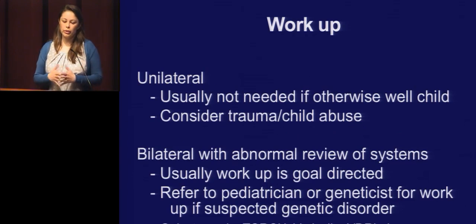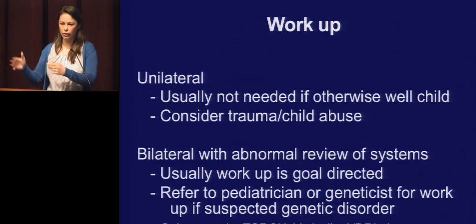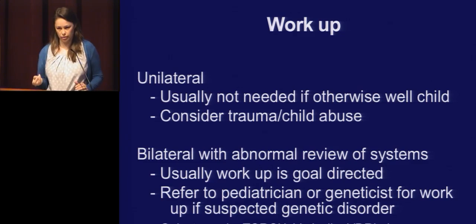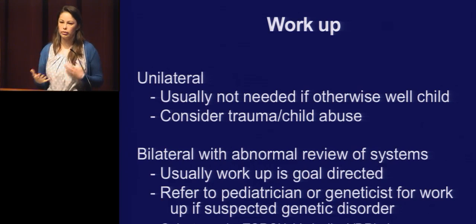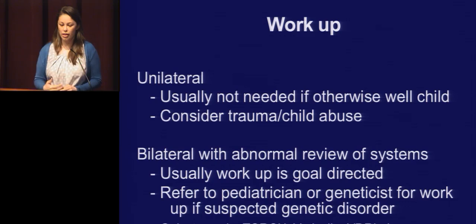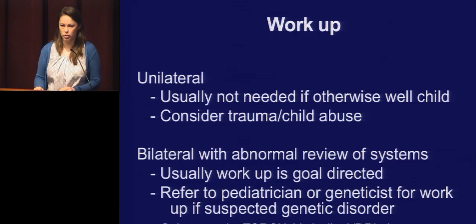Rule of thumb: if it's unilateral, we usually don't do a workup in an otherwise well child. Obviously if anything is off in the review of systems, we tailor our workup toward that. Always consider trauma and child abuse — even if it's just a fleeting thought, you don't want to miss it. Bilateral with abnormal review of systems means a goal-directed workup with referral to oculogenetics or pediatric genetics. For your testing and boards: bilateral cases will more likely warrant a workup than unilateral ones.